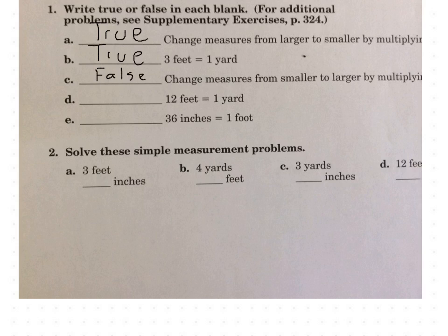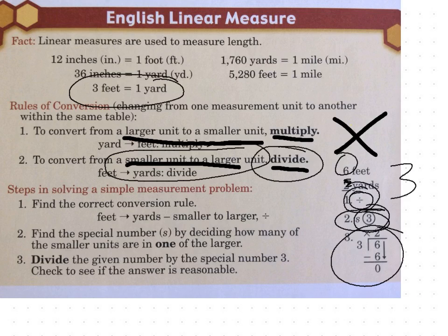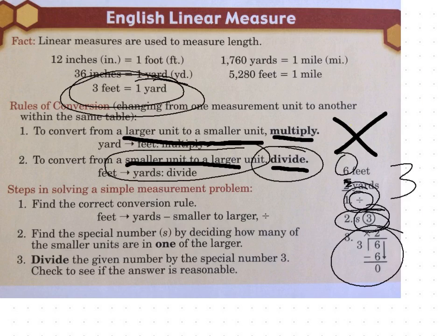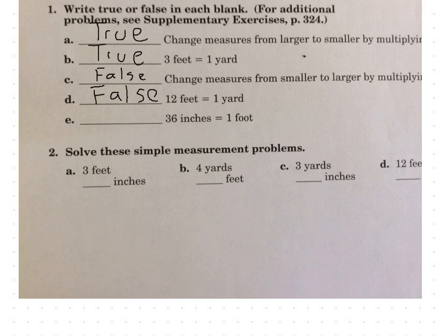Twelve feet equals one yard. If we go back and look, one yard equals three feet, so not twelve feet. That is false. And thirty-six inches equals one foot. Twelve inches equals one foot, so not thirty-six. That is false again.